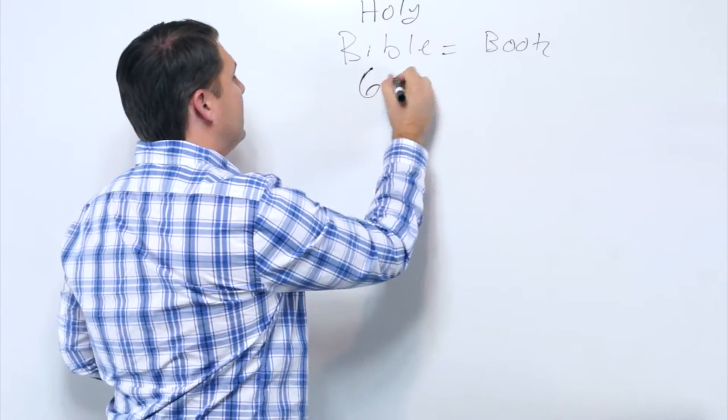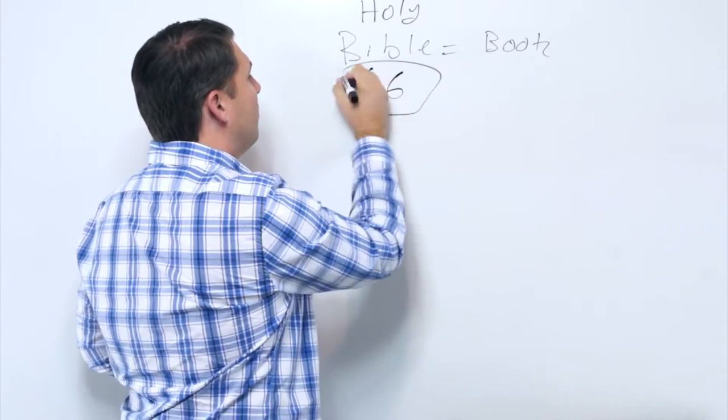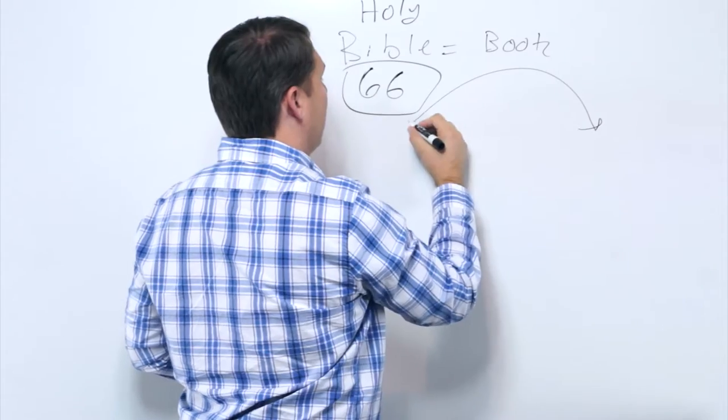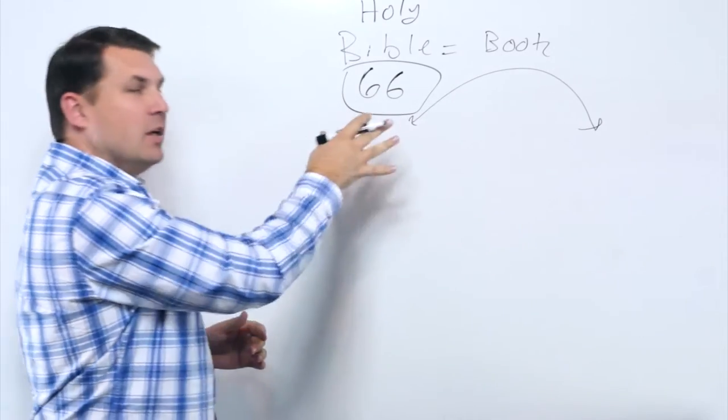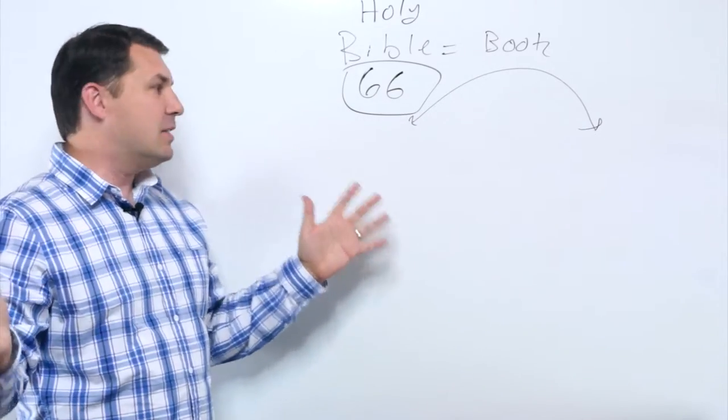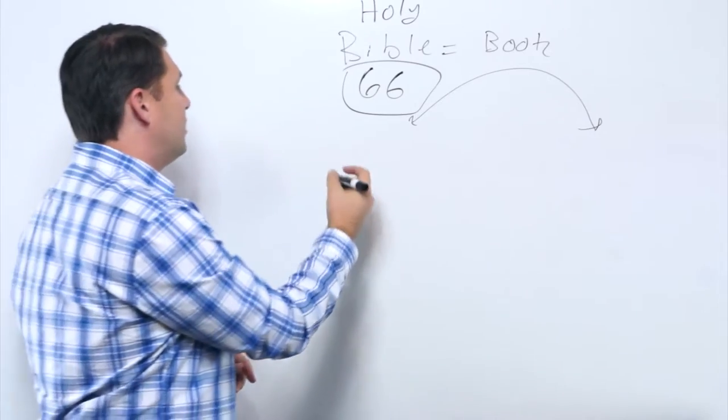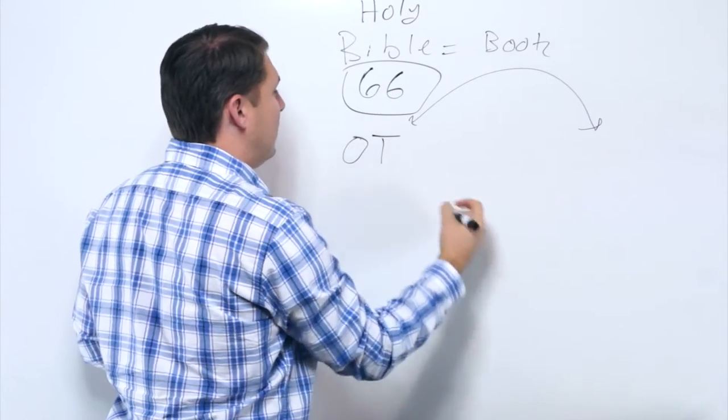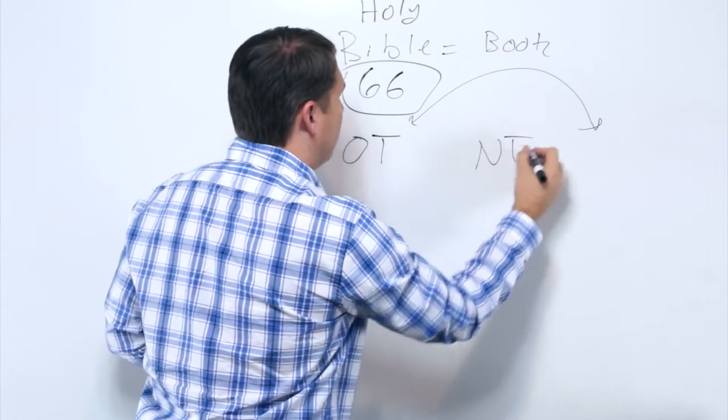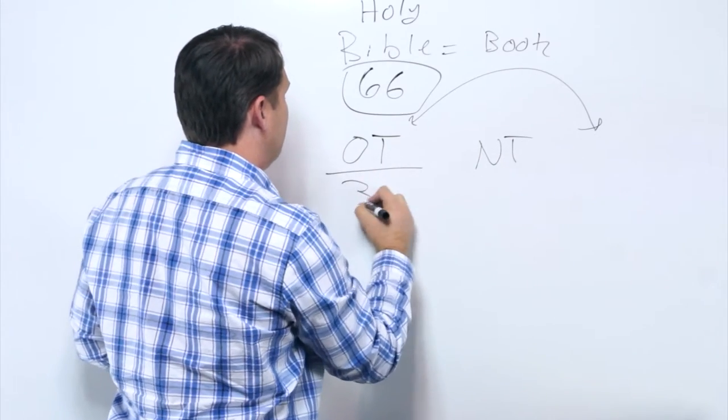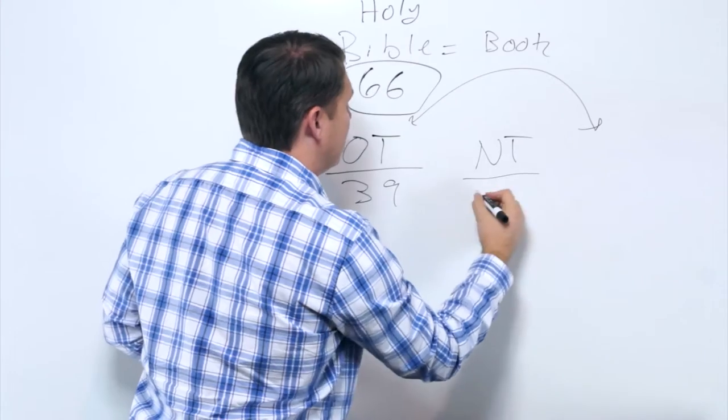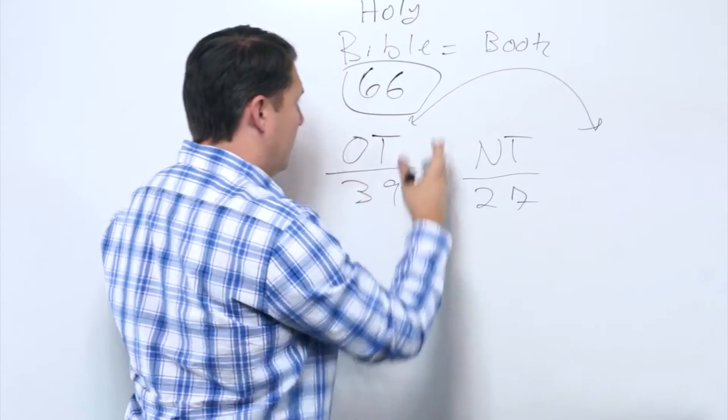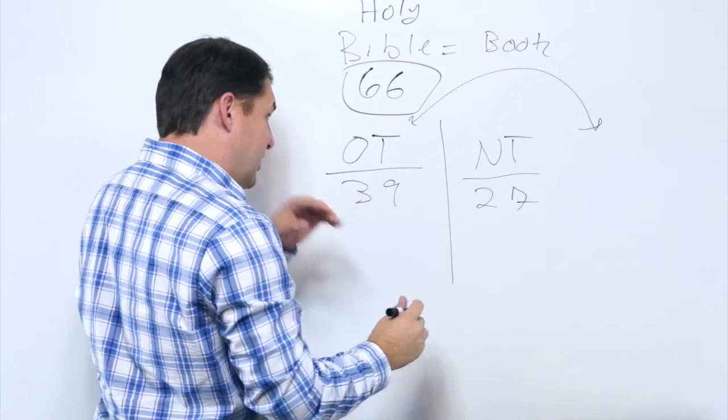It's 66 individual books with one overarching arc and theme from start to finish. That's the big scope, 66 books. Then it's broken up into two sections you can probably guess: the Old Testament and the New Testament. The Old Testament is 39 books, and the New Testament is 27 books. That's the major division there.